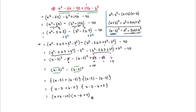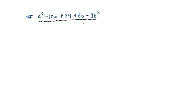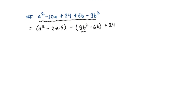This one looked long because I was explaining every step. We'll do the next question with fewer steps. You can pause and try it yourself. For the second expression, I'll put the a terms in one bracket and arrange: a squared minus 2·a·5. Then minus (9b squared minus 6b), and plus 24. When the sign changes inside the bracket, plus 6b becomes minus 6b.